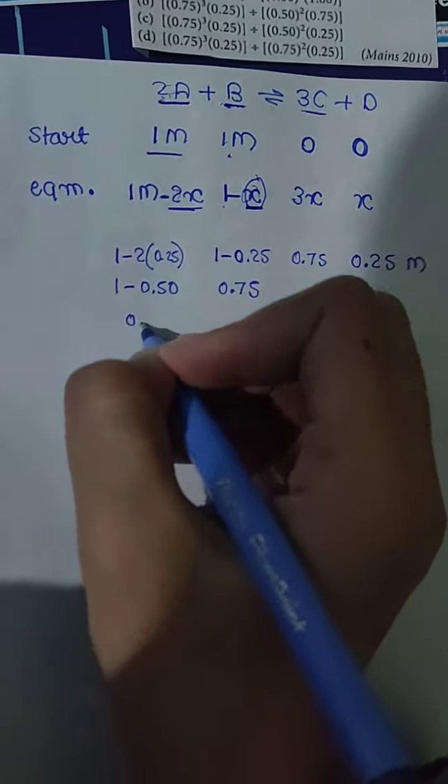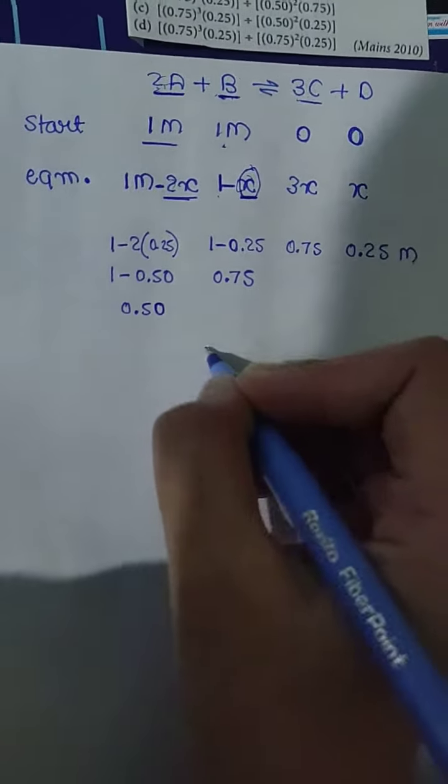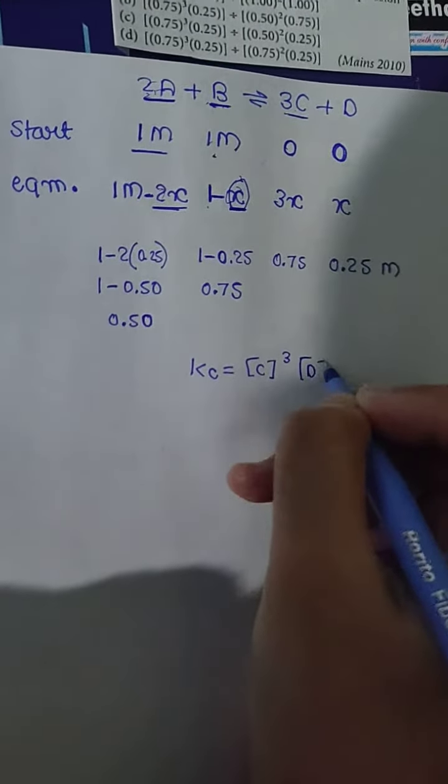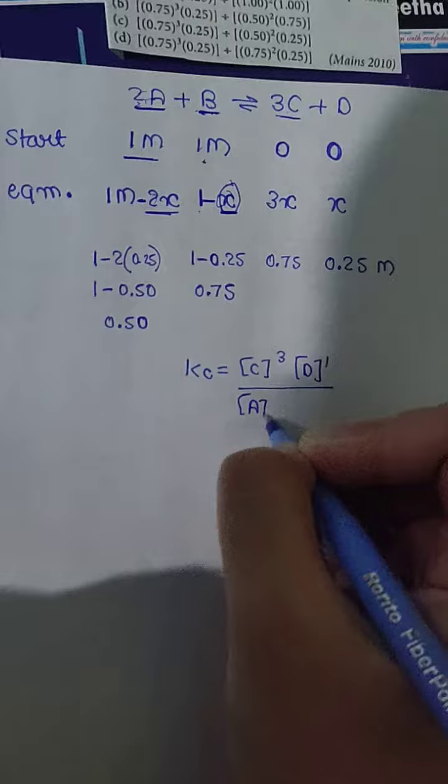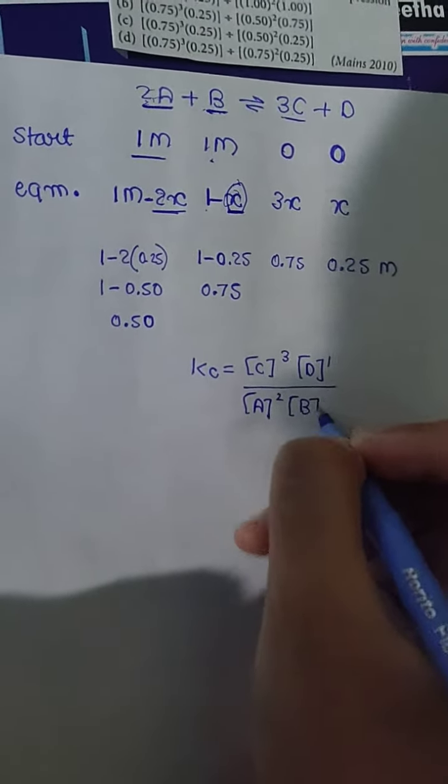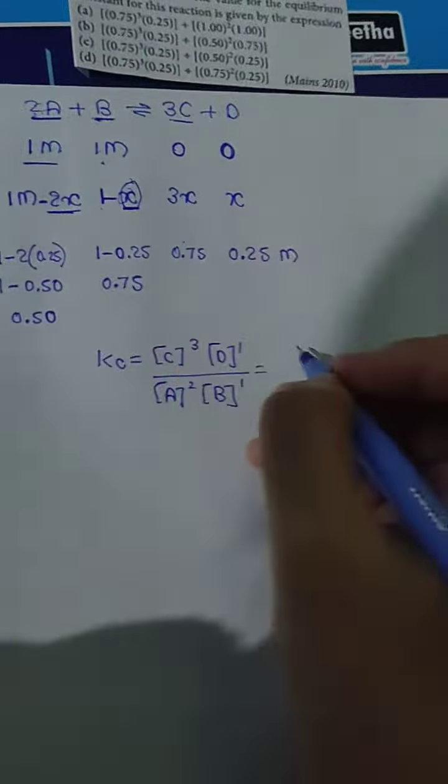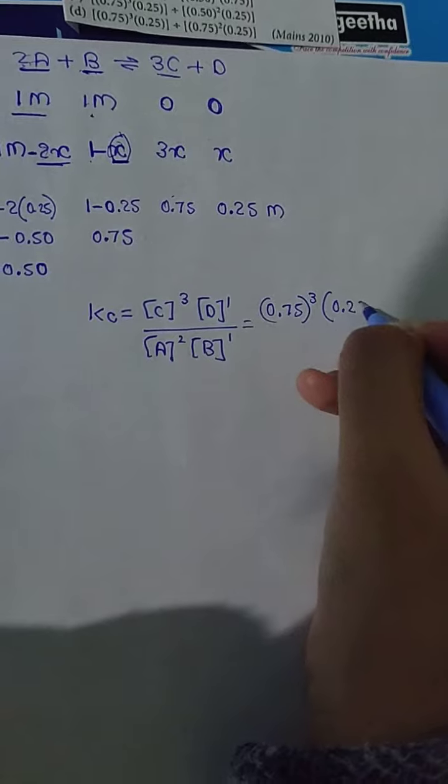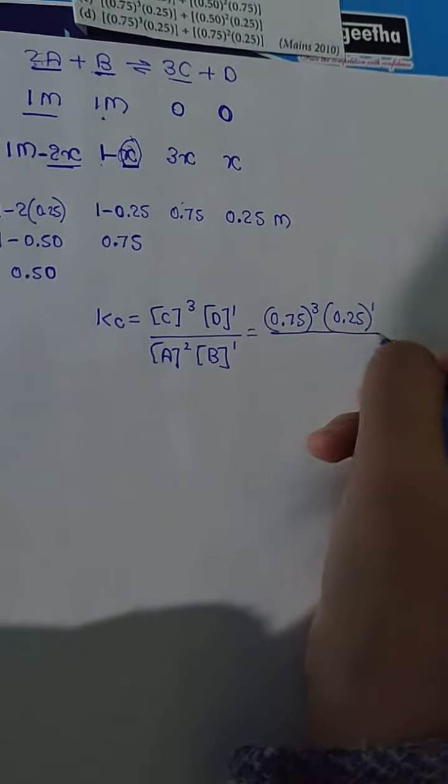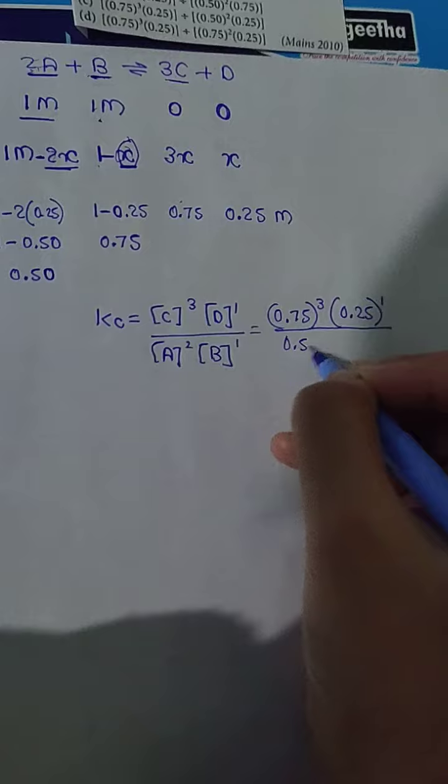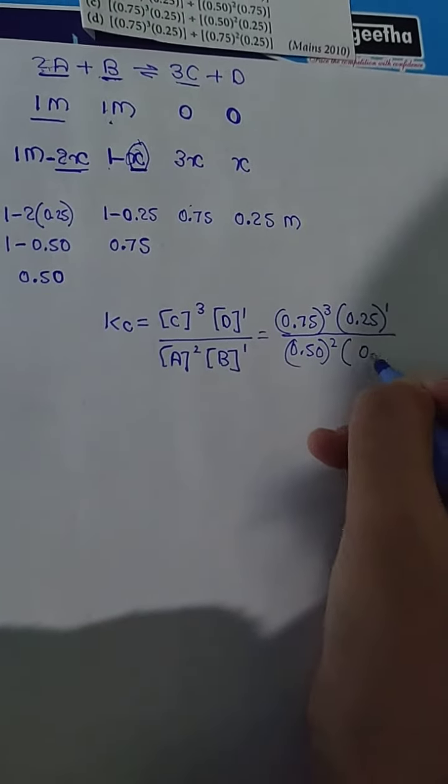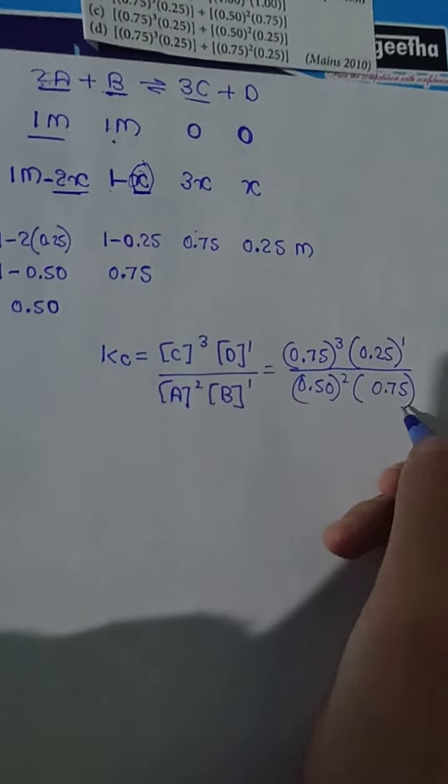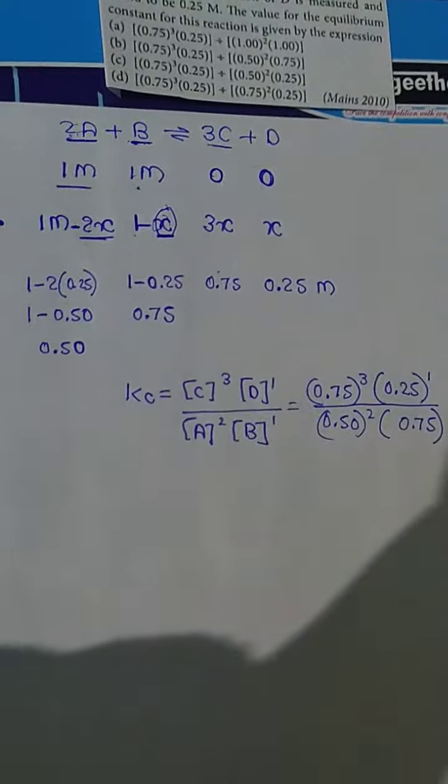Now to find Kc, it's the product concentrations raised to their stoichiometric coefficients divided by reactant concentrations. So C's concentration 0.75 raised to cube, times D's concentration 0.25 raised to power 1, divided by A's concentration 0.50 raised to power square, times B's concentration 0.75 raised to power 1. This gives us the answer, which is option B.